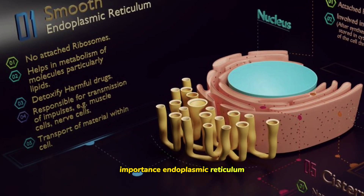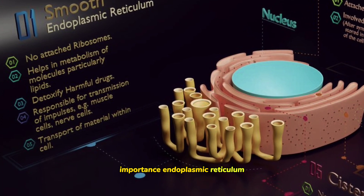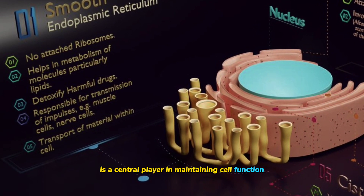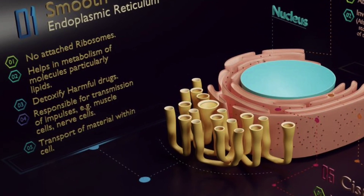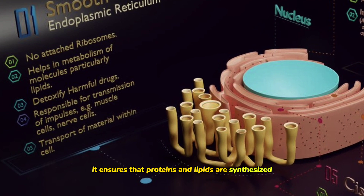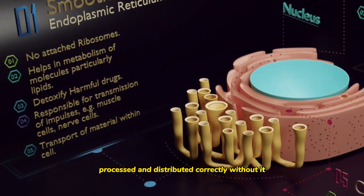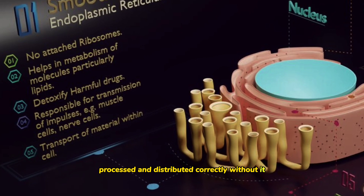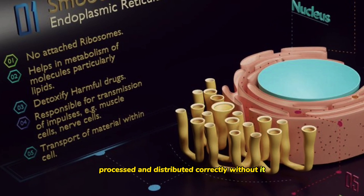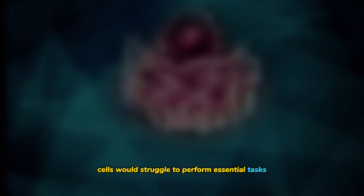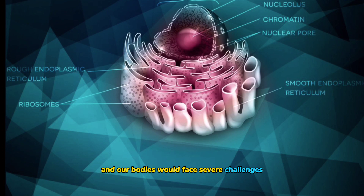The endoplasmic reticulum is a central player in maintaining cell function. It ensures that proteins and lipids are synthesized, processed, and distributed correctly. Without it, cells would struggle to perform essential tasks, and our bodies would face severe challenges in maintaining health and homeostasis.